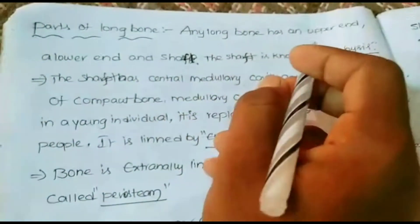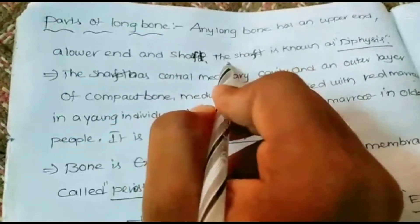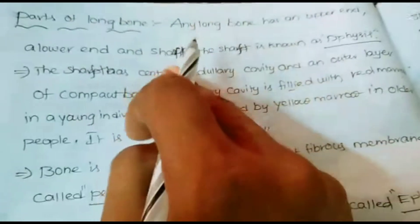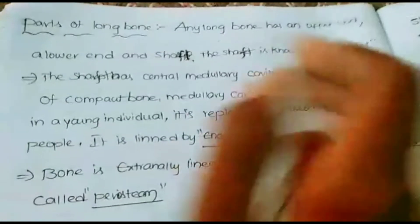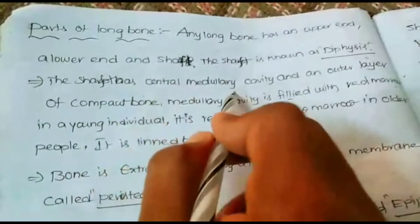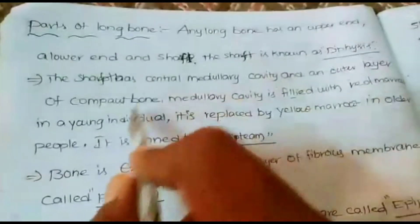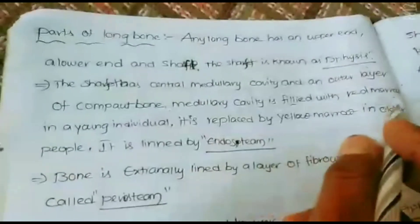Any long bone has an upper end, a lower end, and a shaft. The middle part from upper end to lower end is called the shaft, which is known as the diaphysis. The shaft has a central medullary cavity and an outer layer of compact bone. The medullary cavity is filled with red bone marrow.